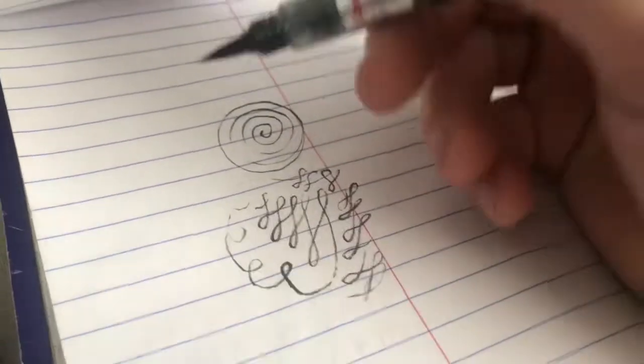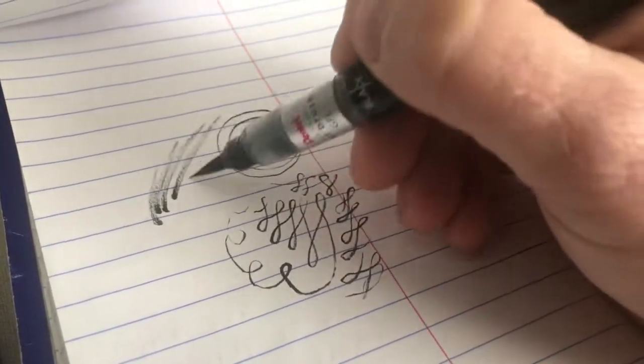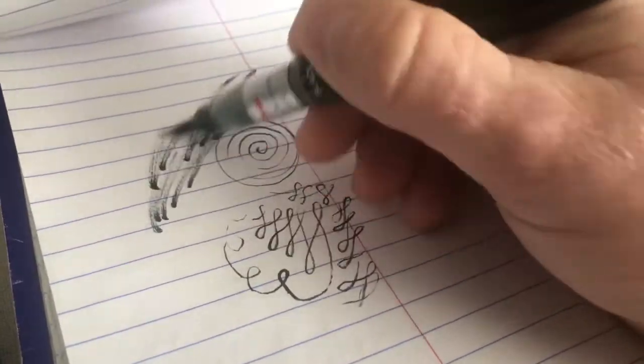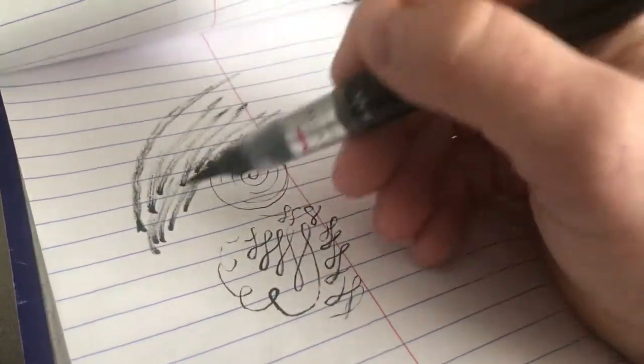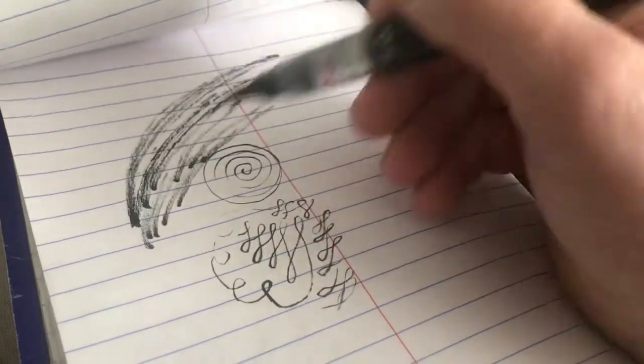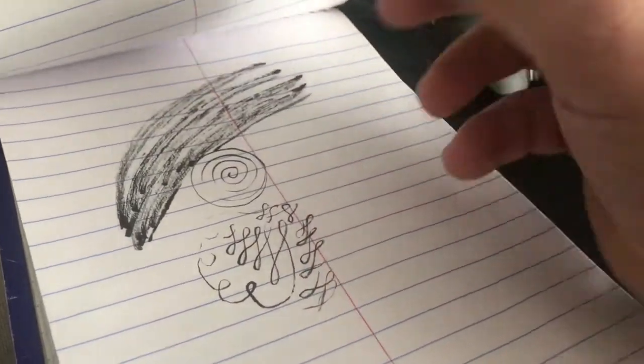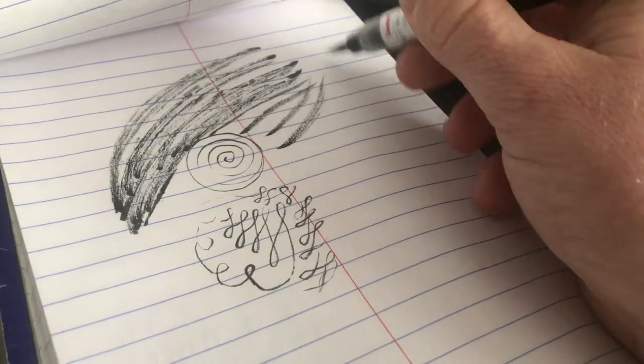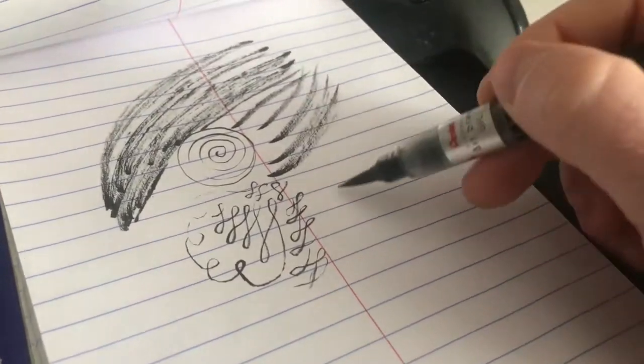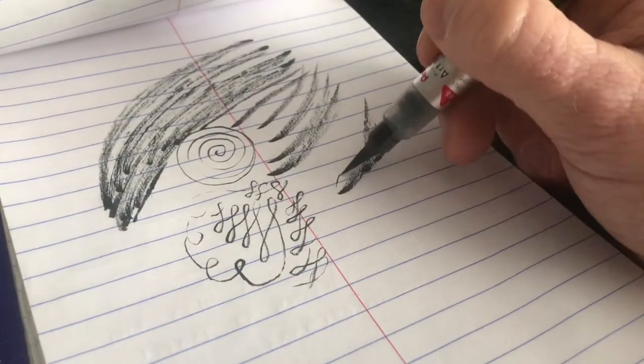When I first started drawing, one of the first things I realized is just how stiff and rigid my mind and my body was. I could not get any fluid movement in my hands whatsoever, which translated from my mind.